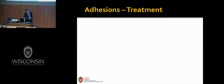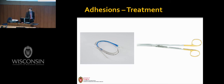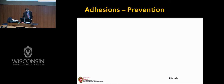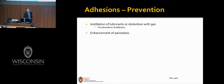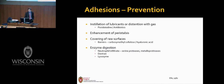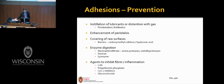The treatment of adhesive disease is reactionary — once an obstruction develops, it is either medical or surgical management. Rather, the majority of work for treatment of adhesive disease has been directed towards prevention. Five avenues have been proposed: the installation of lubricants or distension of gas; enhancement of peristalsis; covering of raw surfaces; enzyme digestion with substances like dextran; and agents to inhibit the deposition of fibrin. We'll focus on some of the most successful — starting with one that has not been successful.